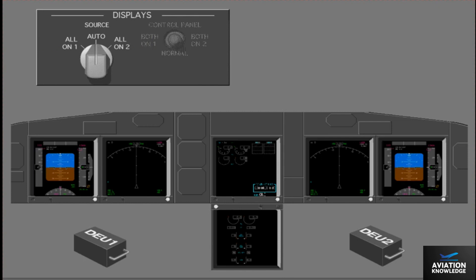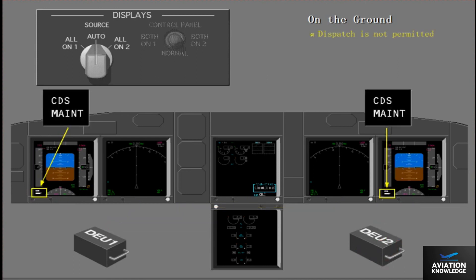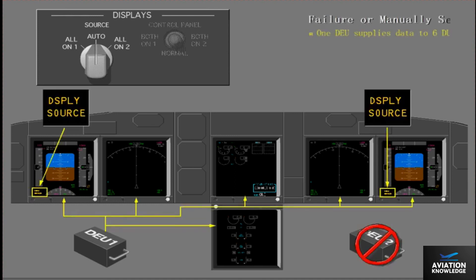Now let's look at DEU fault annunciations. If a DEU fails on the ground before engine start, CDS fault illuminates on the pilot's displays. This is a no dispatch condition. If the display system senses a serious DEU problem, the CDS maintenance indication illuminates on the ground. Dispatch is not permitted. The CDS maintenance annunciations extinguish when an engine is started. If a DEU fails in flight, display source illuminates. This shows that the remaining DEU supplies data to all six DUs. All displays are available and operate normally.